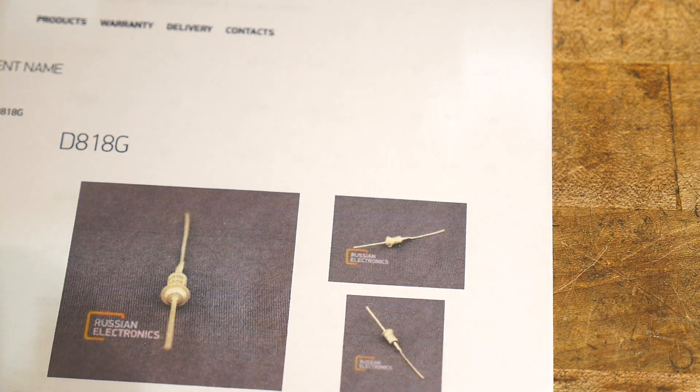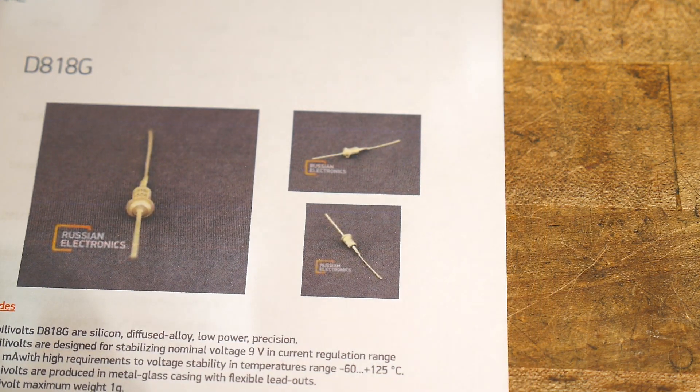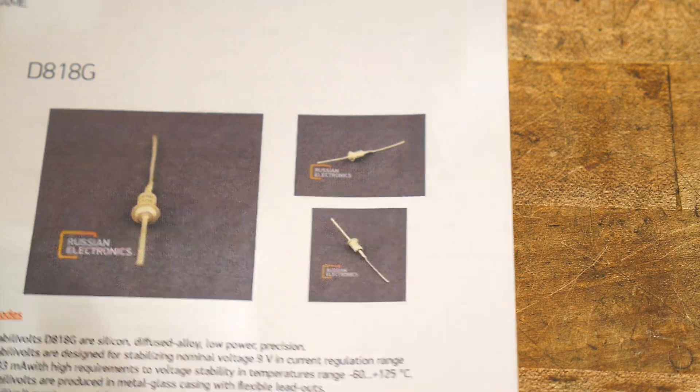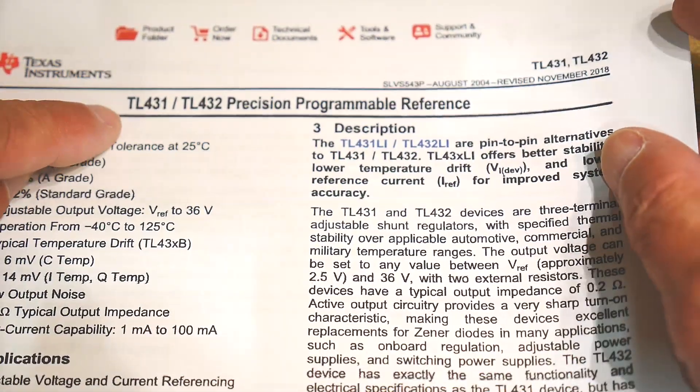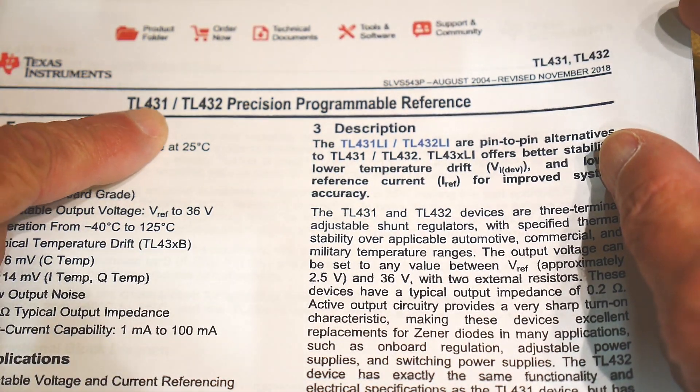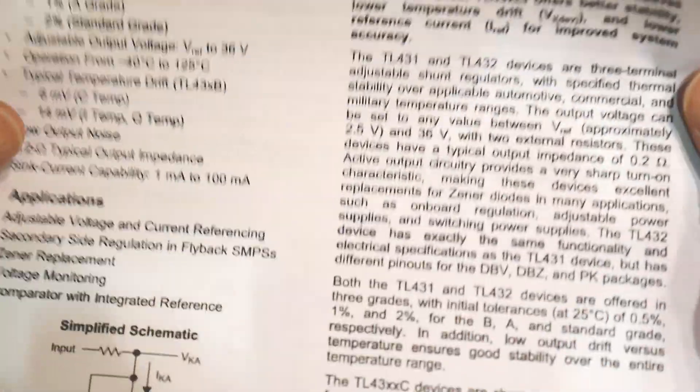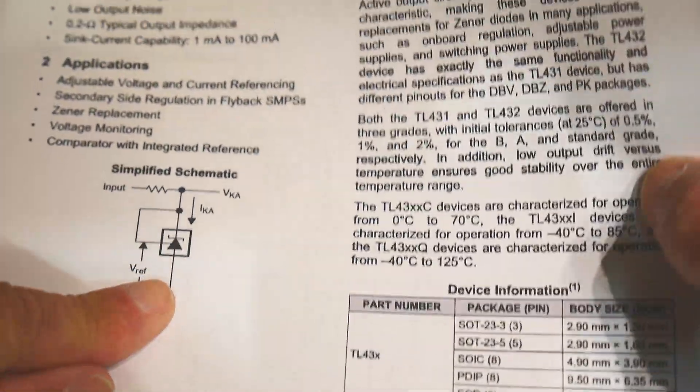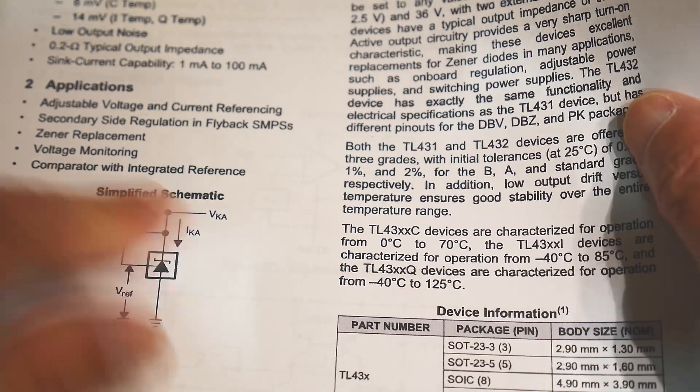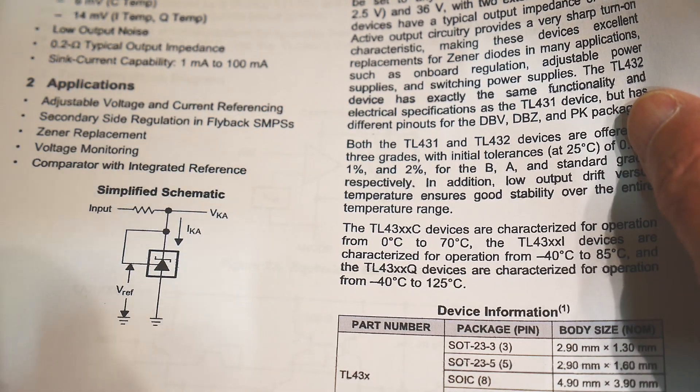In my drawers I have some other Zener diodes, but they're not going to be any better than this one. But I do have another part which is kind of strange. I've used it before. It's a TL431, which is like a Zener diode with some extra goodies in it.